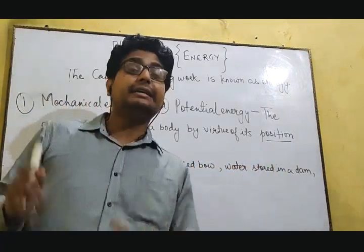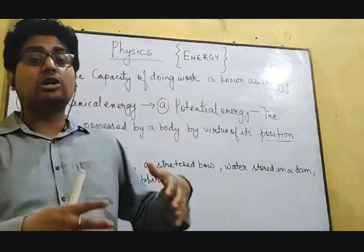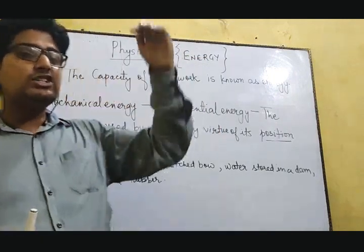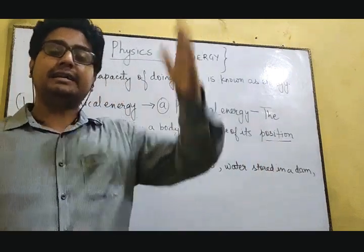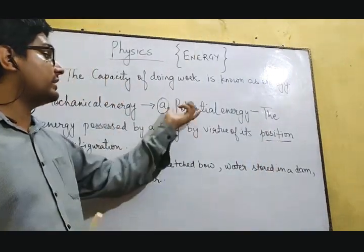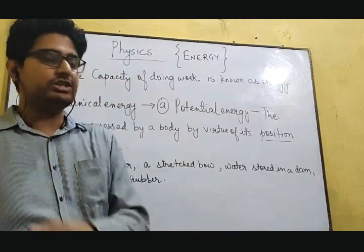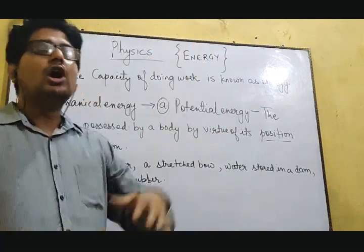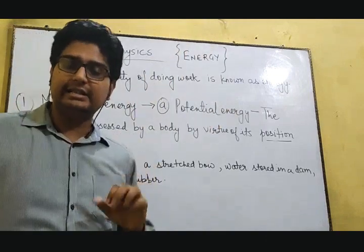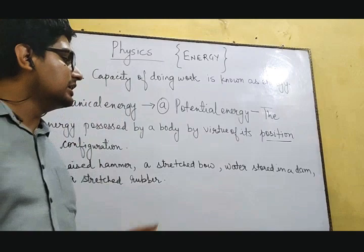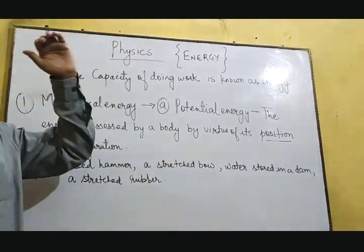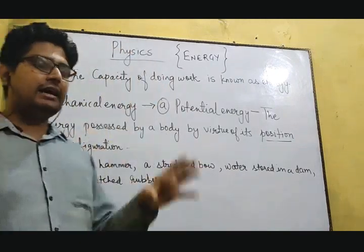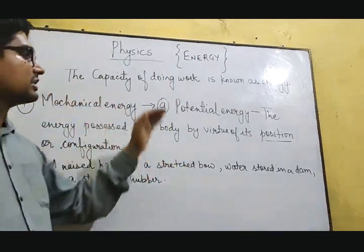Third example: water stored in a dam. You generally store water in a tank on the terrace at a height. When you open the doors of the dam or open the tap at the bottom, the water comes out with a huge force. That is the example of potential energy — the water placed at a height, whether in a dam or a water tank, stores energy which is termed as potential energy. The objects are generally placed in a position of rest.